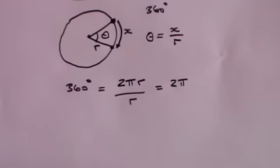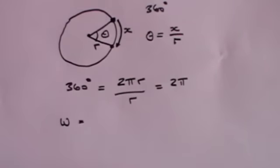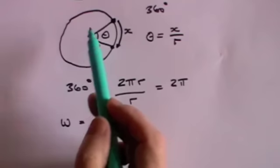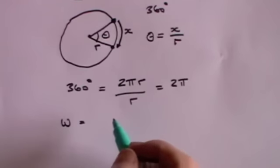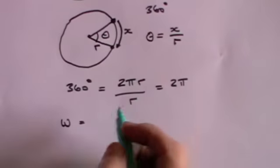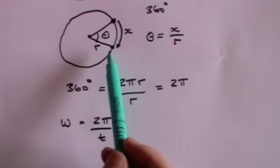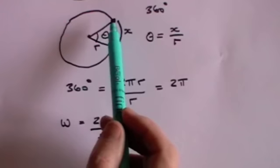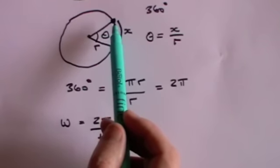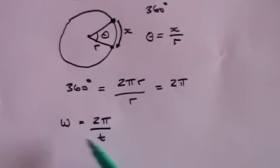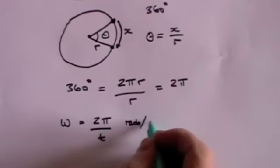Now we come to the subject of angular speed, which we give the symbol omega. Omega is the change in the angle with respect to time — it's how fast the angle changes — measured in radians per second, which will be 2π divided by T. When the ball goes around a full circle, it sweeps out 2π radians, and it does that in T seconds. So omega equals 2π over T radians per second.